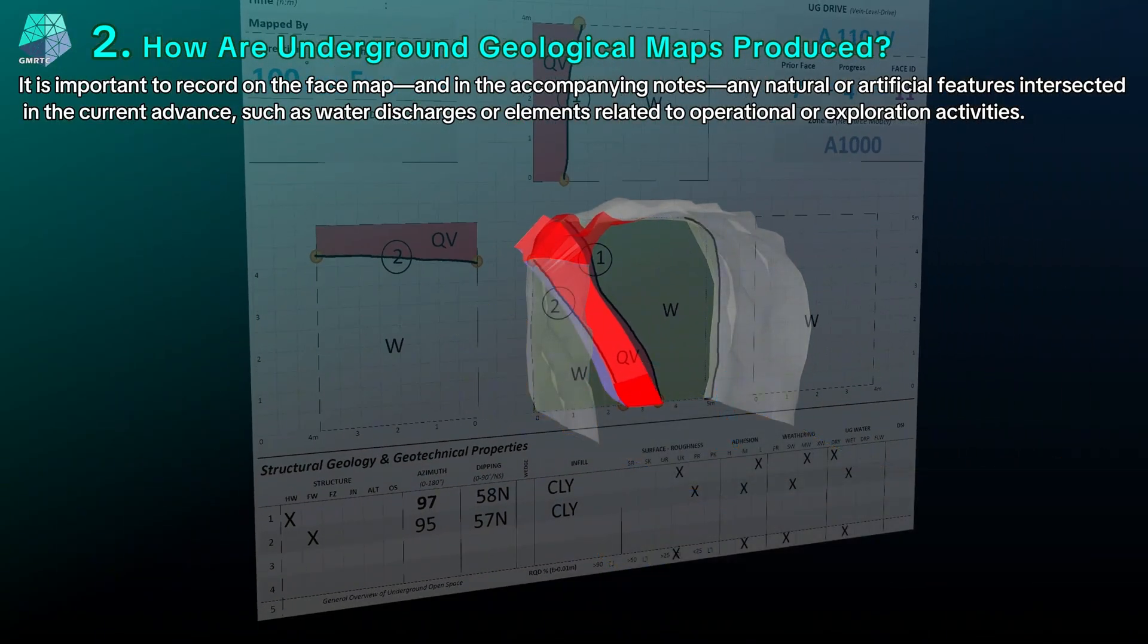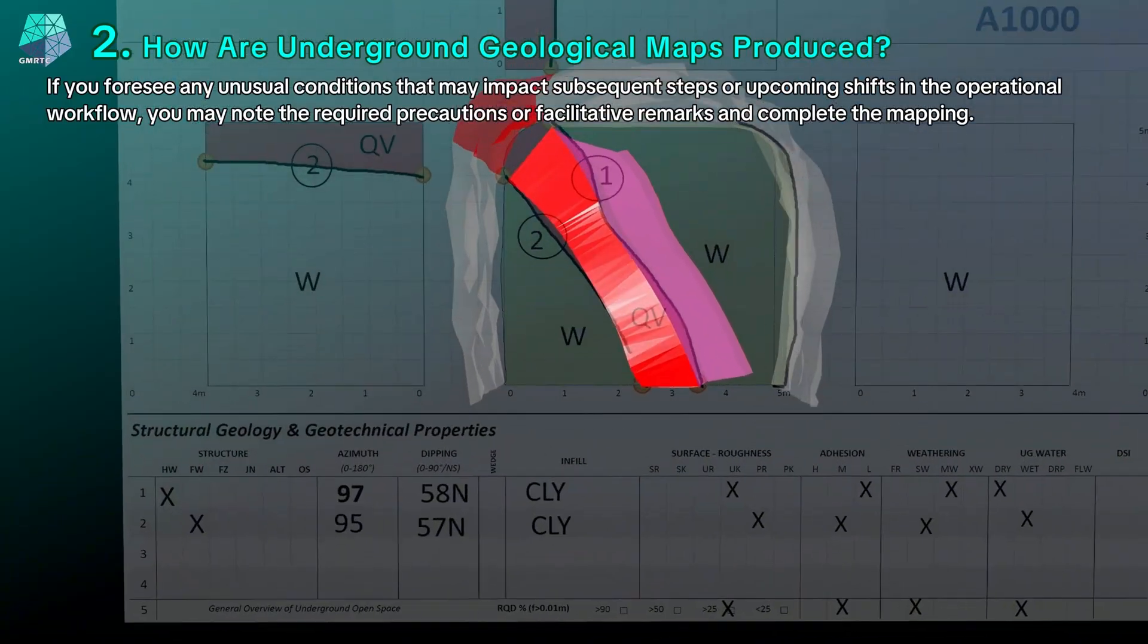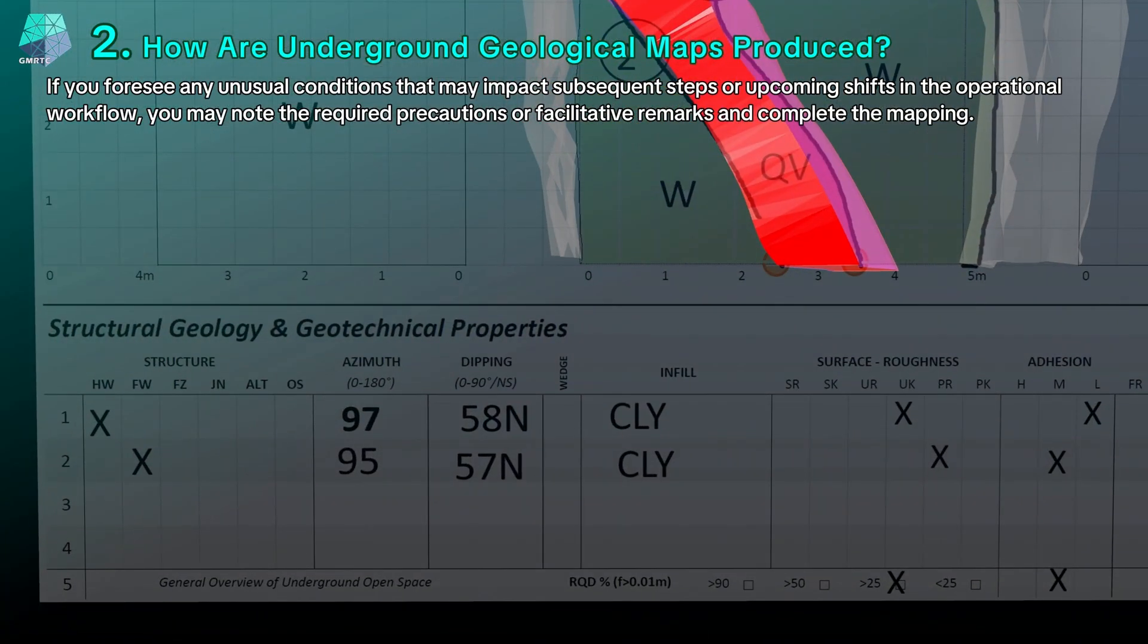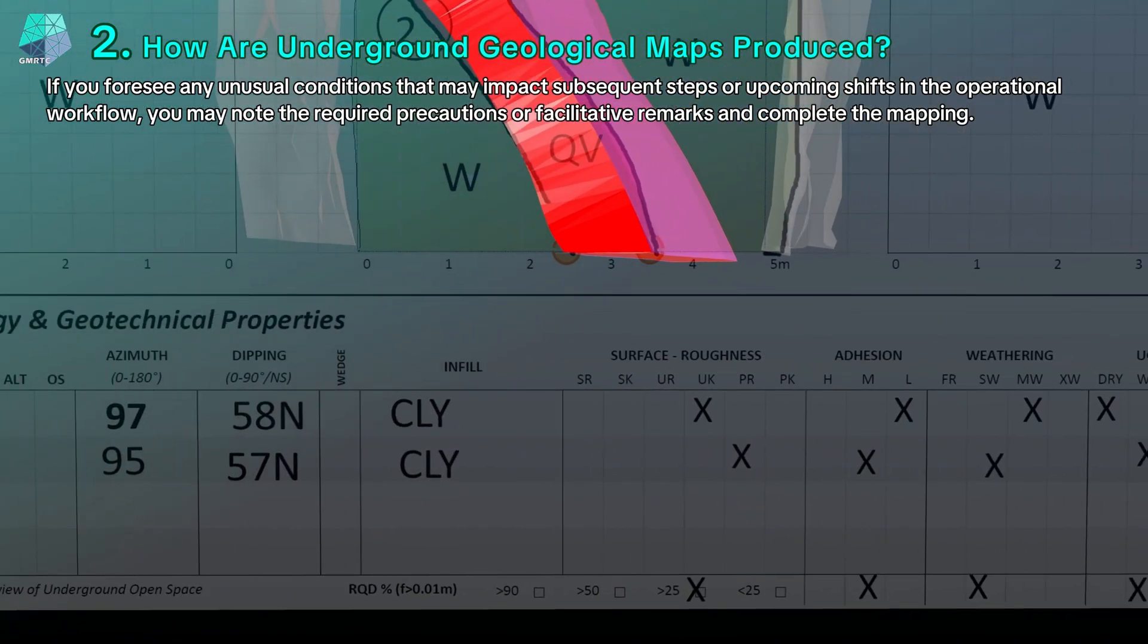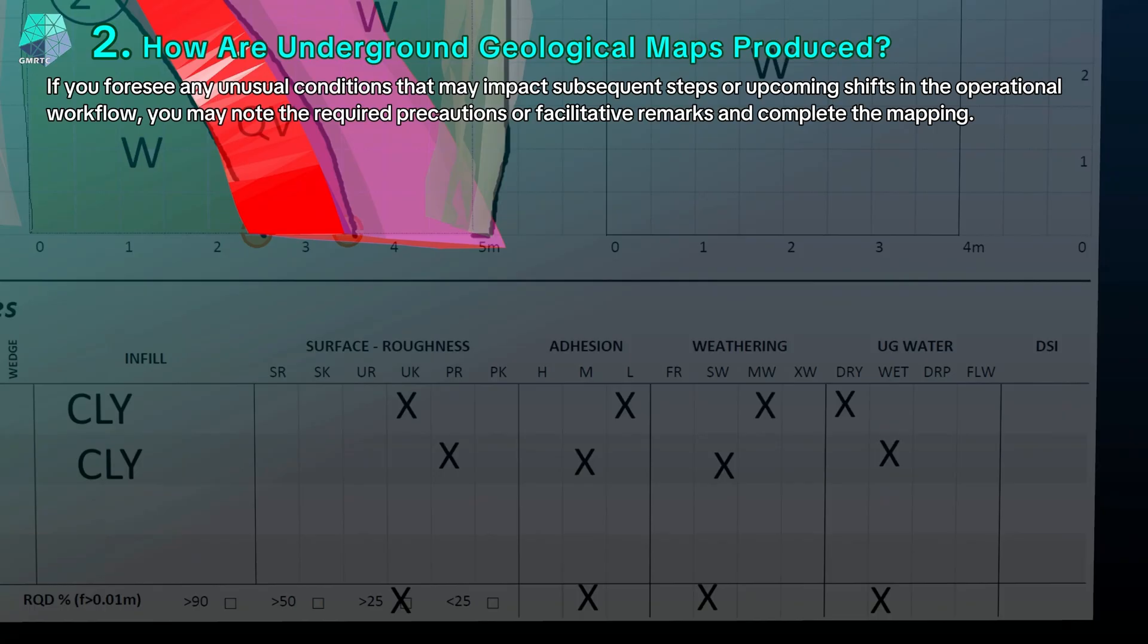If you foresee any unusual conditions that may affect subsequent steps or shifts in the operational workflow, you may note the necessary precautions or facilitative remarks and complete the mapping.